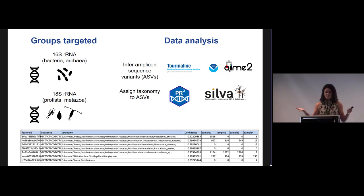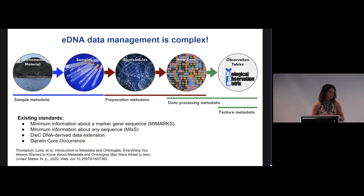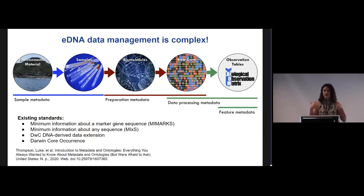These are databases that have sequences in them that people have assigned some sort of taxonomic information to. Managing eDNA data is complex in part because there are many steps to arrive at the eDNA occurrences. You have the context of the environment that the samples were taken, all of the information about how those samples were prepared, and many different ways to process eDNA data to arrive at that taxonomic assignment.